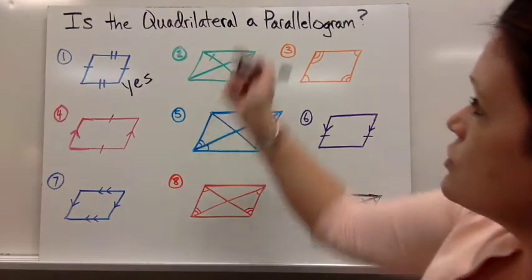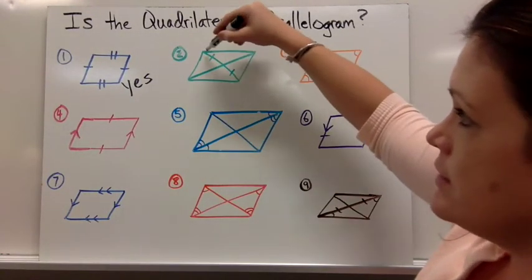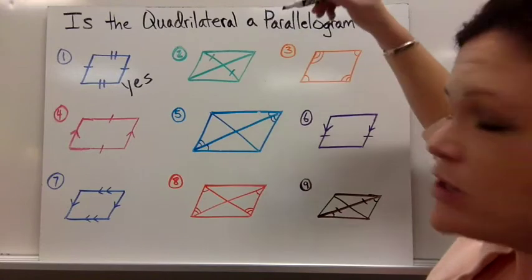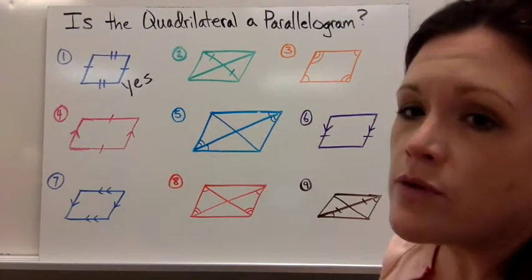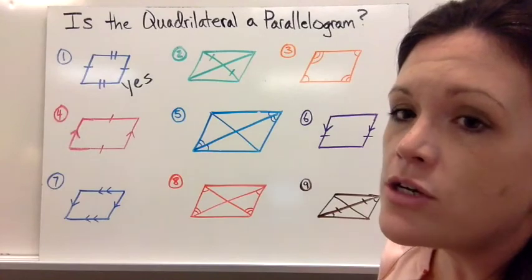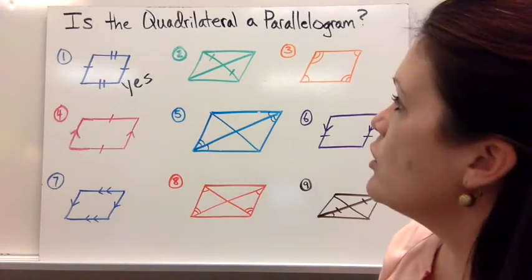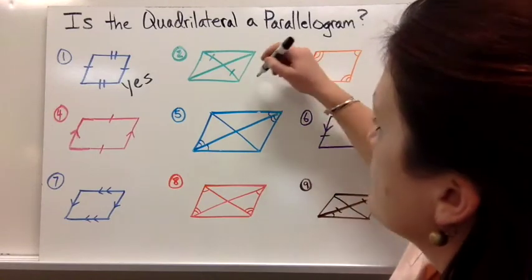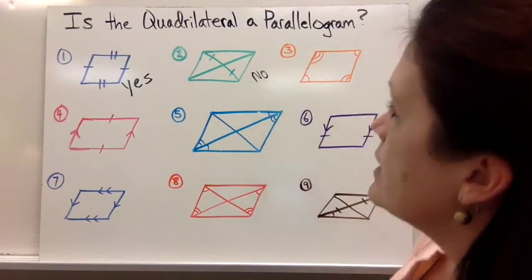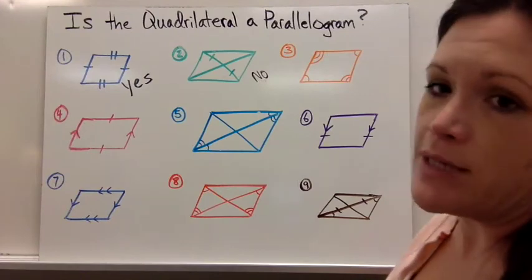Number two, your diagonal is bisected for one of them, but we don't know anything about the other diagonal. You never want to assume information about a picture. So it might look like it would be bisected, but don't go by looks alone. Go by the information that they label or that they state within the problem. So we have to say that one will be a no. We don't have enough information.